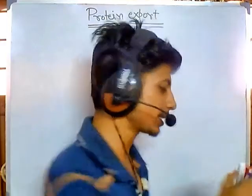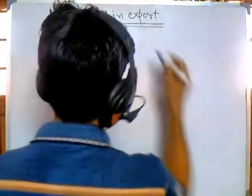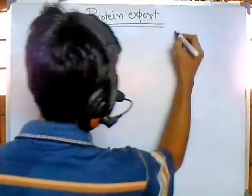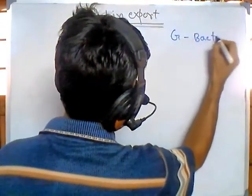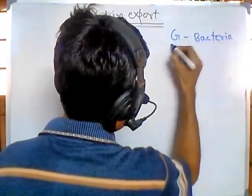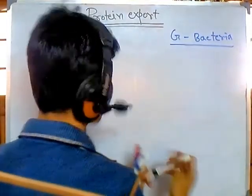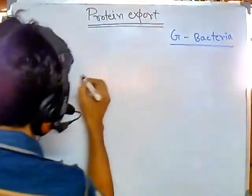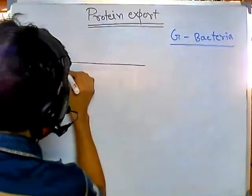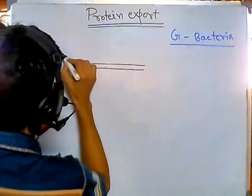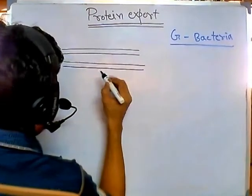If we take the example of gram-negative bacteria — because we'll be talking about bacteria — for gram-negative bacteria the destination for a protein can be many. If I draw a diagram it will be easier. So let's say this line is the inner membrane and this is the outer membrane of the gram-negative bacteria.